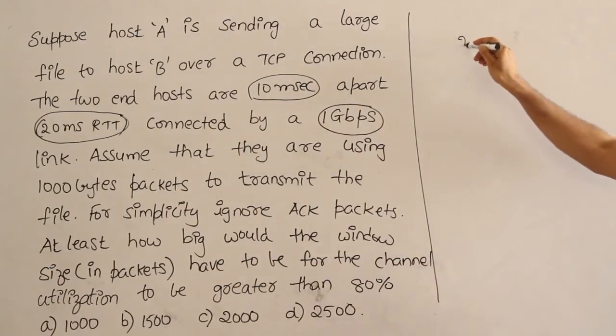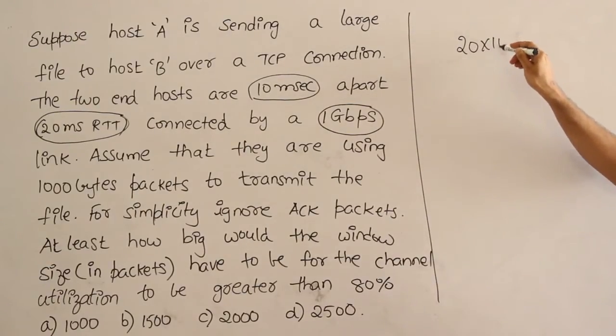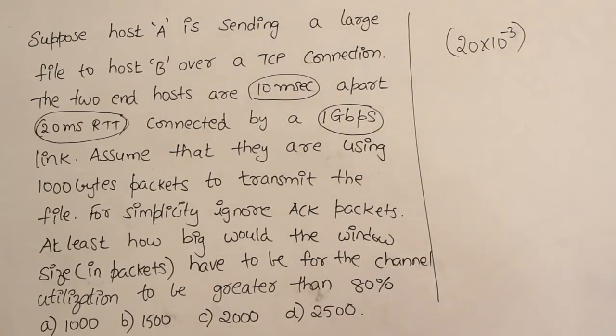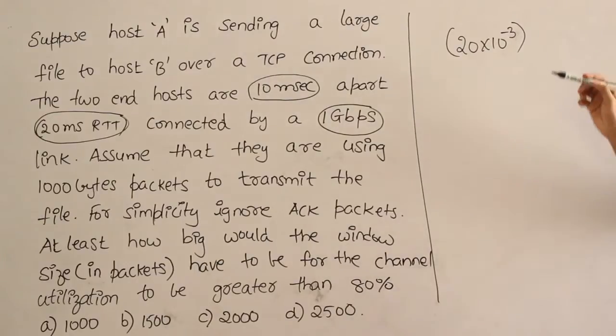So given time is 20 milliseconds. In 20 milliseconds how many bytes I could have sent over a link which is having 1 Gbps? How many bits?